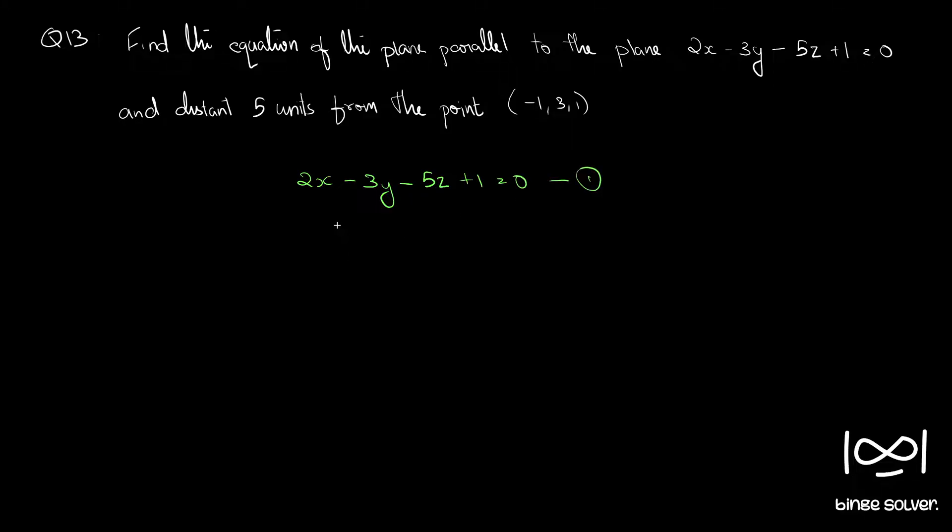And it is said that we need to find the equation of a plane parallel to this plane. So any plane parallel to the plane 1 will be of the form 2x minus 3y minus 5z plus k equal to 0. A plane parallel to 1 will be of this form.